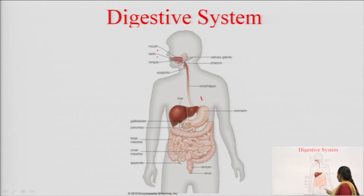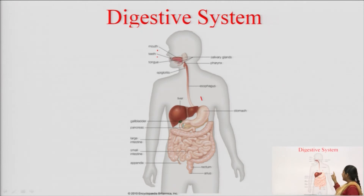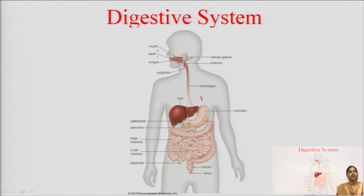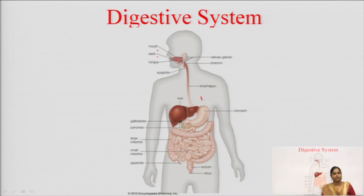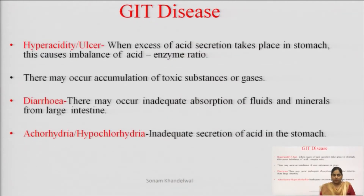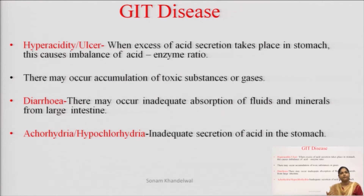This whole area is the gastrointestinal tract. When we have problems in this gastrointestinal tract — when there is a problem in normal functioning — then we give treatment through GI agents or GI drugs. Disease means that when our normal functioning body is altered, then there is a disease. So we will study GI tract diseases.